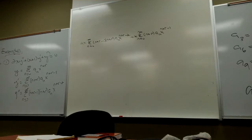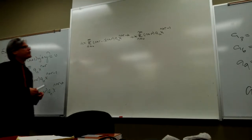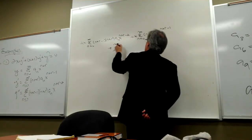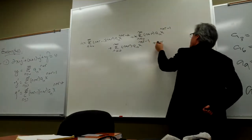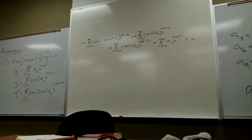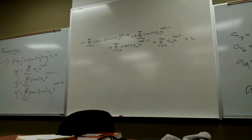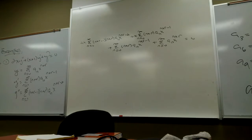I only divided both sides by 2X so you could clearly see that zero is not an ordinary point. Distributing the Y prime multiplication across the addition gives me a second term: the sum as N ranges from zero up, of (N plus R) times A sub N times X to the (N plus R minus 1). And everything set equal to zero. Every single term on the left-hand side has a factor of X to the R, so if you don't mind, I'll divide both sides by X to the R.